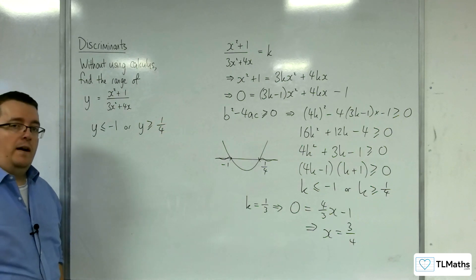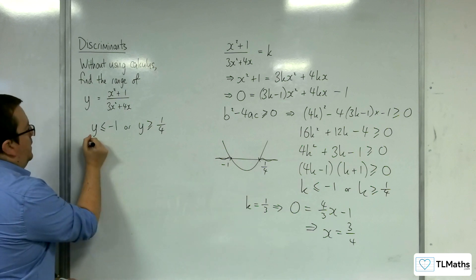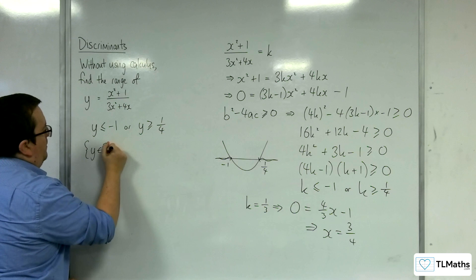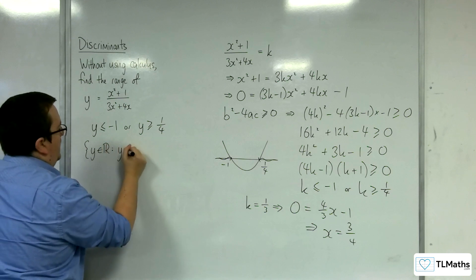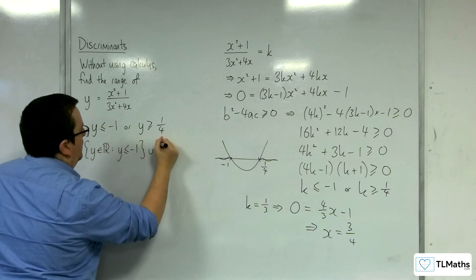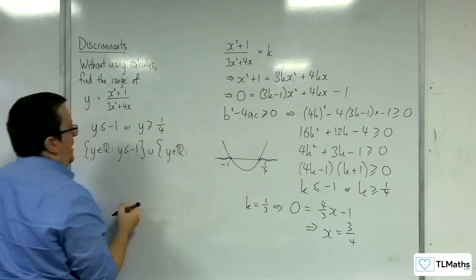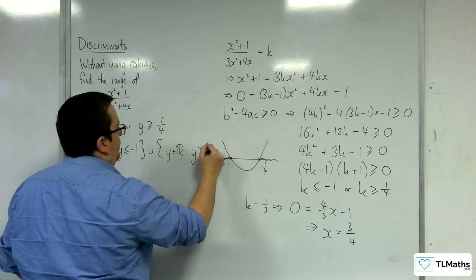You could be asked to write that answer in set notation, in which case it would be y belongs to the real numbers, such that y is less than or equal to minus 1, union y belongs to the real numbers, such that y is greater than or equal to 1 quarter.